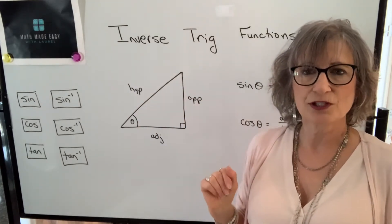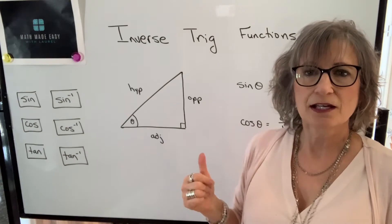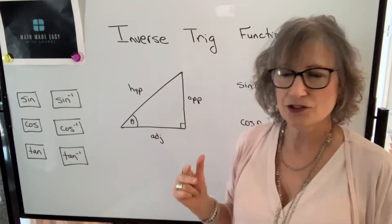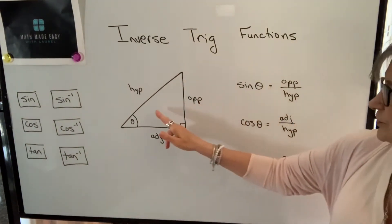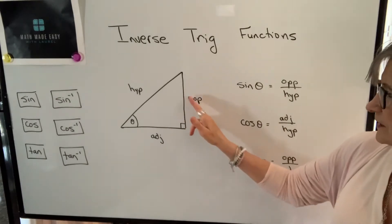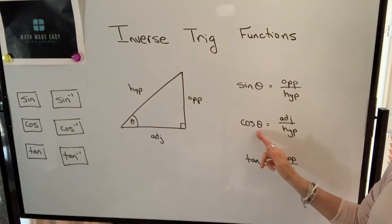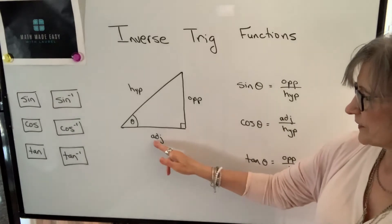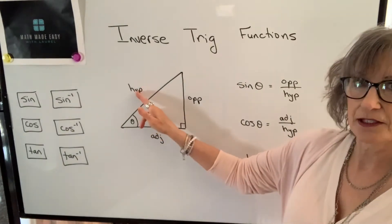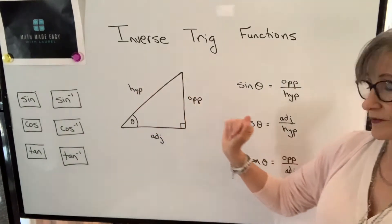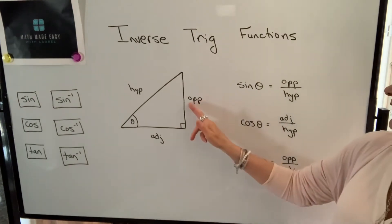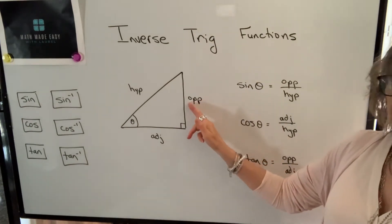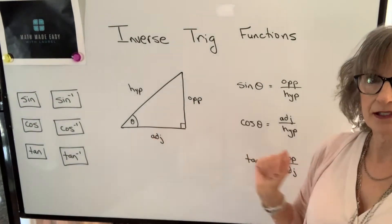There are three different ratios that we talked about: sine, cosine, and tangent. Sine is defined as the ratio of opposite to hypotenuse. Cosine is defined as the ratio of the length of the adjacent side to the length of the hypotenuse. And tangent is defined as the ratio of the length of the opposite side to the length of the adjacent side.